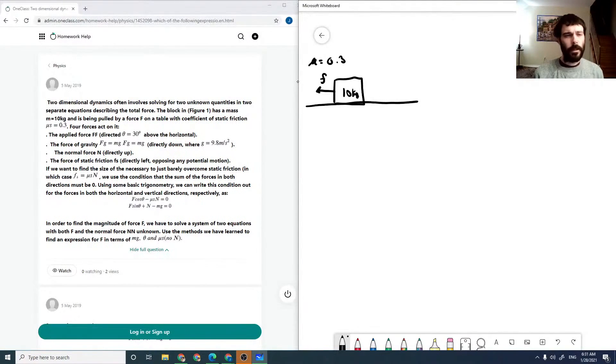There's four forces acting on it. So there's an applied force which is angled at 30 degrees. We've got our force of gravity and a normal force, and this is our static friction. So the box isn't moving, and we want to find the force necessary to just overcome our static friction.